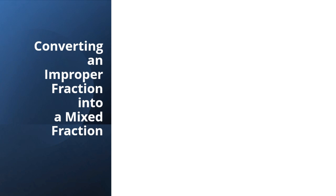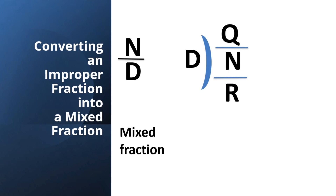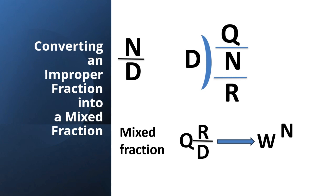Let us discuss how we can convert an improper fraction into a mixed fraction. A fraction is written as numerator upon denominator. We divide the numerator by the denominator. After dividing, we get a quotient and a remainder. The quotient is the whole part, the remainder becomes the new numerator, and the denominator remains the same denominator.